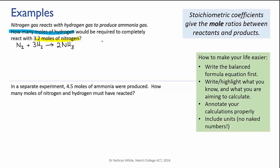So to work this out, we need to look at the ratio from the equation. We can see that for every one mole of nitrogen, we need three moles of hydrogen. So the mole ratio is one to three. So however much nitrogen we have, we need three times as much hydrogen.